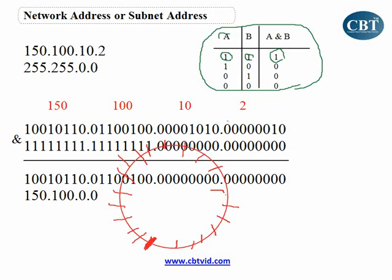Now, there is another address in the network, which is the last address. You see that here — in this network, I've got the first address and I've got the last address. The first address is the address of the whole network, like an area code — you cannot use it. We have another address, which is the last address in every network. That last address is called the broadcast address.